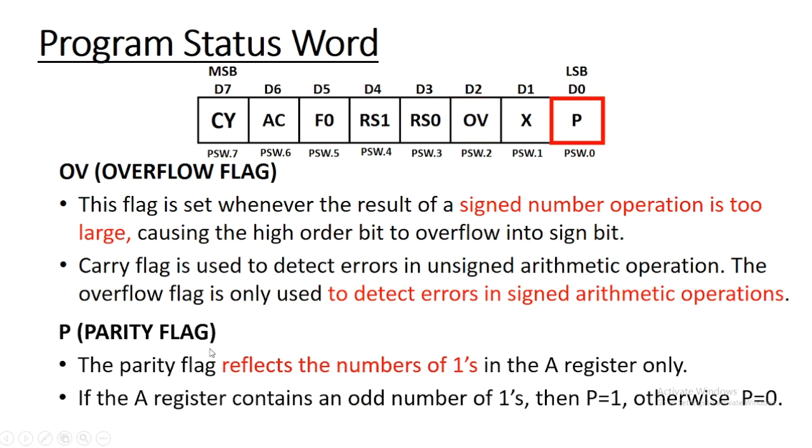Next flag is the parity flag. Parity flag reflects the number of 1s in the A register. When arithmetic and logical operations are performed, the result is stored in accumulator, which is register A.